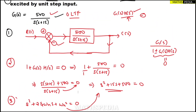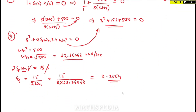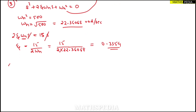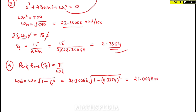For the fourth part, we find peak time, peak overshoot, and settling time. Starting with peak time: tp equals pi divided by omega_d. We first find omega_d which equals omega_n times the square root of (1 minus zeta²). Substituting omega_n equal to 22.36068 and zeta equal to 0.3354, we get omega_d equal to 21.0648 radians per second.